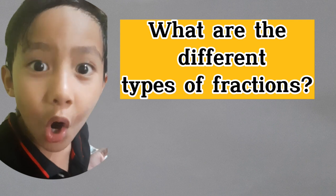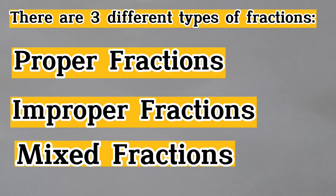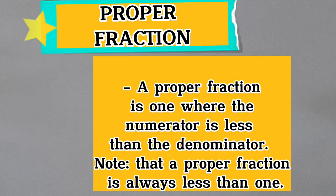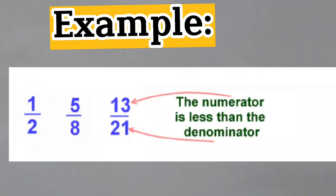What are the different types of fractions? There are three different types: proper fractions, improper fractions, and mixed fractions. A proper fraction is one where the numerator is less than the denominator. Note that a proper fraction is always less than one. For example: one over two, five over eight, thirteen over twenty-one — the numerator is less than the denominator.